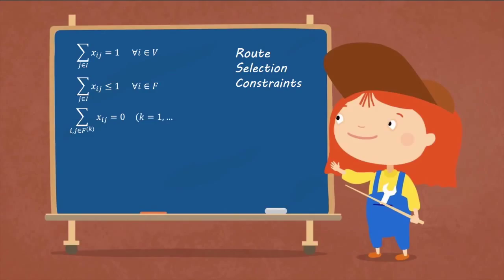The first equation denotes that each customer vertex has only one successor. The second means that each charging station can be visited at most once. The third represents that dummy vertices of the same charging station are not connected.